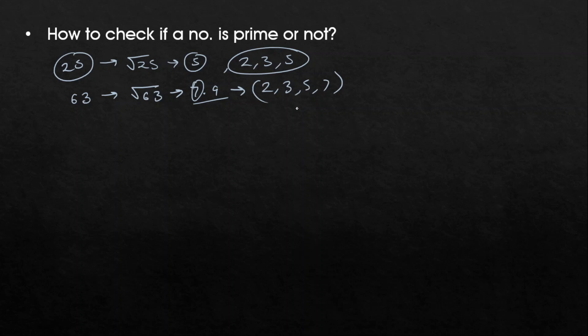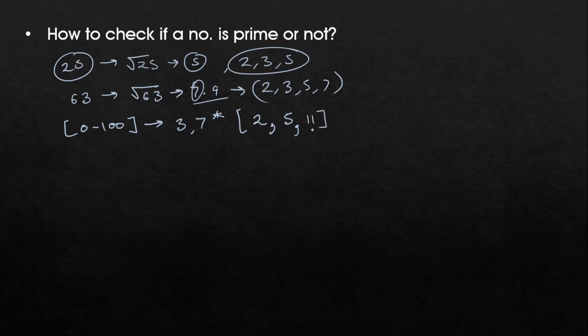We have a far better method. For numbers from 0 to 100, just check divisibility by 3 and 7. If the number is divisible by either, it's not prime; otherwise it is prime. The condition is: you should already be able to visually eliminate multiples of 2, 5, and 11.